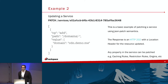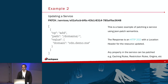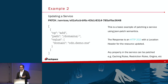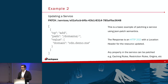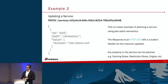Updating a service is similar. We follow JSON patch semantics. You call a PATCH to services and pass in the service ID that was returned on the create call. If you're familiar with JSON patch, you pass in an operation — it could be add or remove — then the path of the entity within the JSON that you're trying to update, and the new value. Again, we return a 202 with a location header so you can poll for the status. In this example, I'm just adding a domain, but anything in the service can be updated: caching rules, restriction rules, more origins, more domains.